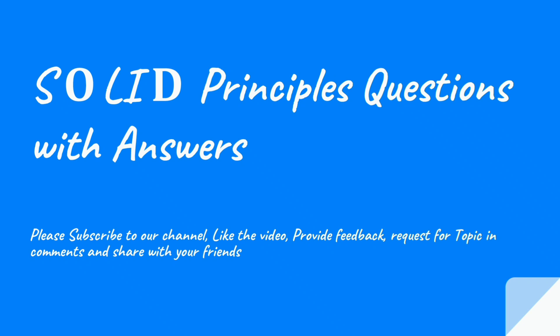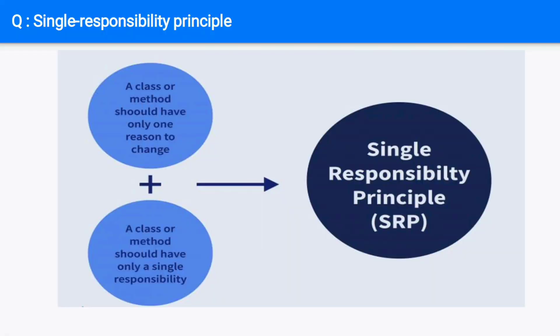Single Responsibility Principle: a class should only have a single responsibility — that is, only changes to one part of the software's specification should be able to affect the specification of the class. One of the most popularly utilized design principles, the Single Responsibility Principle helps to achieve object-oriented goals. By implementing it, we can cut down dependency between functionalities and therefore better handle our code for incorporating new features over the long run.